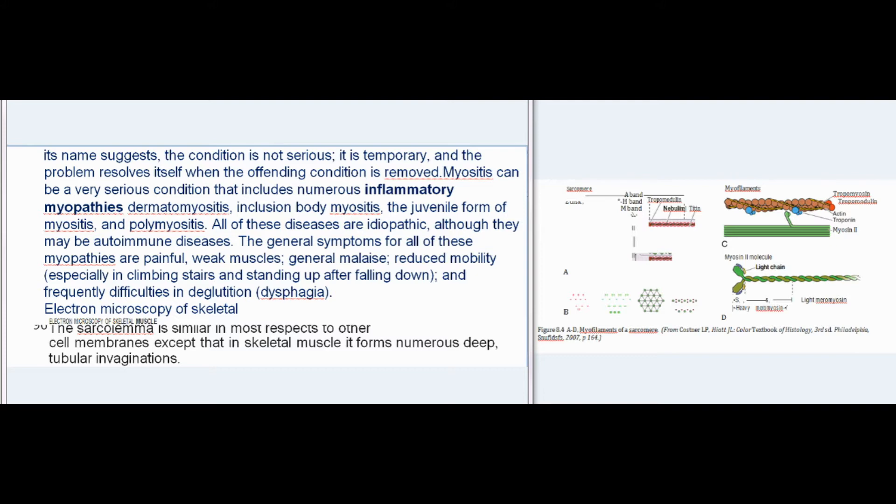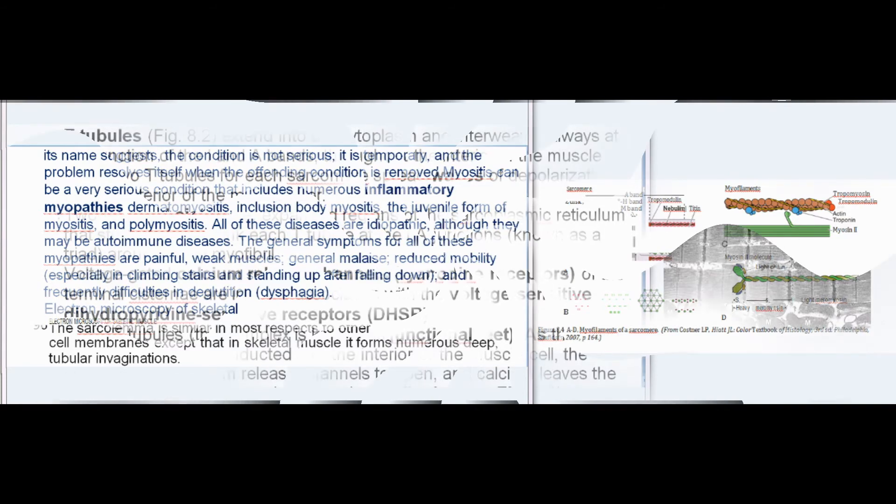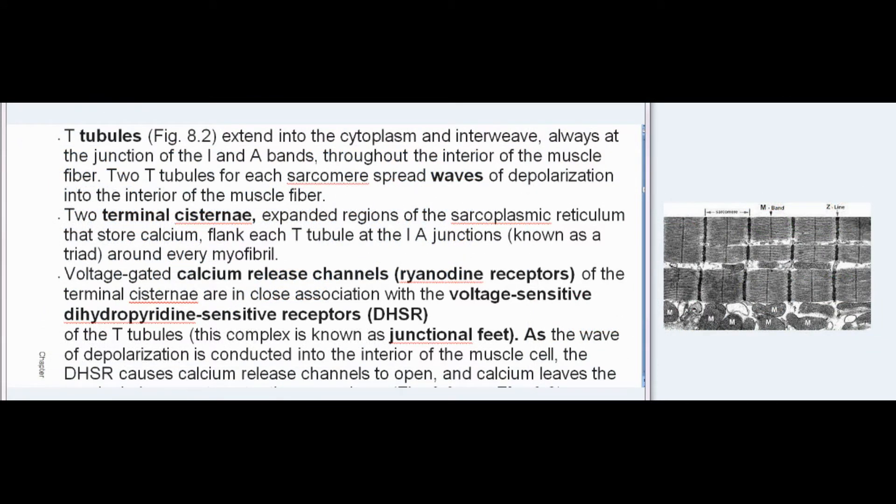In electron microscopy of skeletal muscle, the sarcolemma forms numerous deep tubular invaginations called T-tubules, which extend into the cytoplasm and interweave, always at the junction of the I and A bands, throughout the interior of the muscle fiber. Two T-tubules for each sarcomere spread waves of depolarization into the interior of the muscle fiber. Two terminal cisternae — expanded regions of the sarcoplasmic reticulum that store calcium — flank each T-tubule at the I-A junctions, known as a triad, around every myofibril. Voltage-gated calcium release channels, ryanodine receptors, of the terminal cisternae are in close association with the voltage-sensitive dihydropyridine-sensitive receptors (DHSR) of the T-tubules; this complex is known as junctional feet.